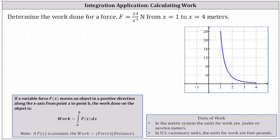Determine the work done for a force, F equals 24 divided by x cubed newtons from x equals one to x equals four. I've graphed the force function here on the right.